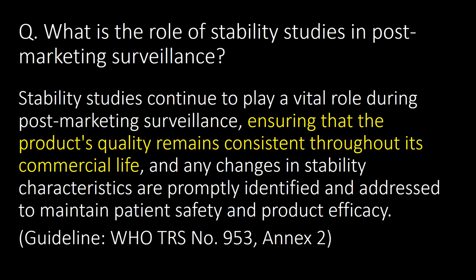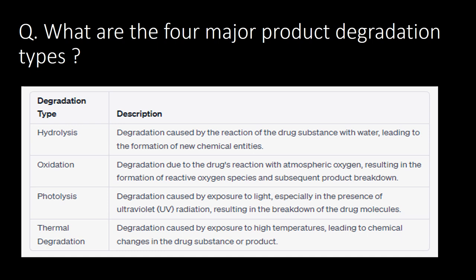What are the four major product degradation types? The four major product degradation types are hydrolysis, oxidation, photolysis, and thermal degradation. You can refer to the table below for degradation types and their descriptions. Reference Guideline WHO TRS 953 Annex-2.